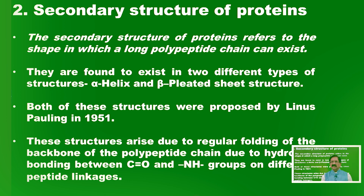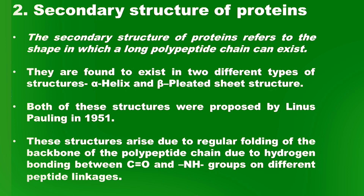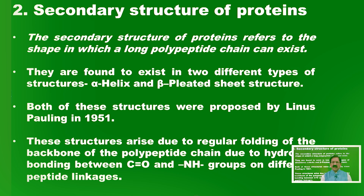Now let's look at the secondary structure of proteins. The secondary structure refers to the shape in which a long polypeptide chain can exist. Even if a chain has three or four amino acids, if the chain is a simple linear chain it will not be stable. This is why the protein molecule takes on its own three-dimensional shape, and we call this the secondary structure.